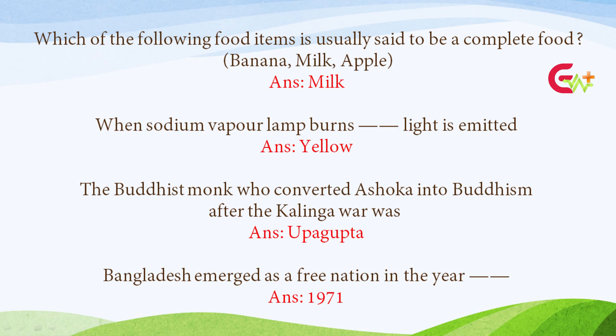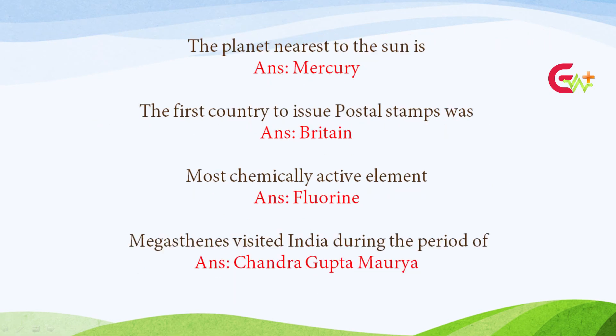The Buddhist monk who converted Ashoka into Buddhism after the Kalinga war was? Answer: Upagupta. Bangladesh emerged as a free nation in the year? Answer: 1971. The planet nearest to the sun is? Answer: Mercury.